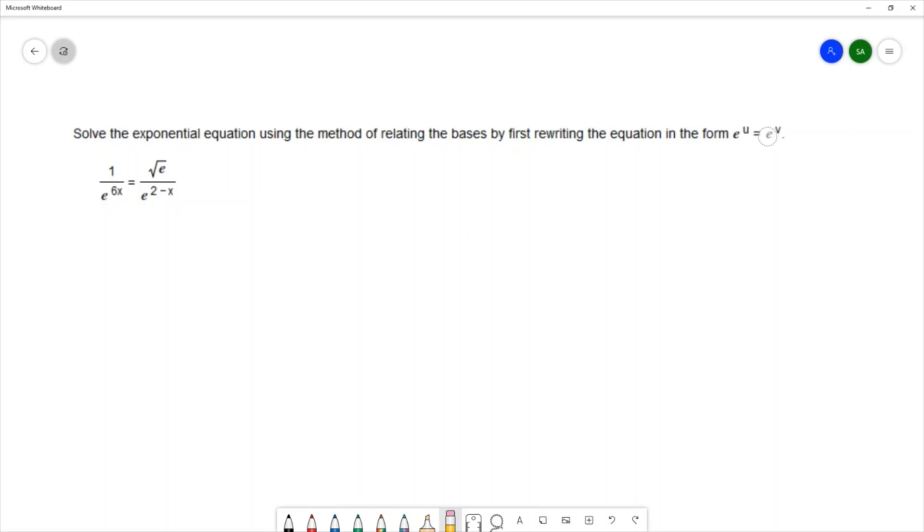We can see that we have e on the left and e on the right, so we'll be able to use some exponential properties to simplify and write this with a base of e on both sides.